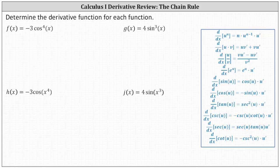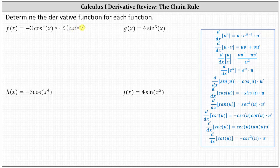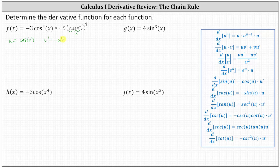When applying the chain rule, we need to identify the inner function, which we often identify as u. To identify the inner function here, it might be helpful to rewrite the function f of x as negative three times the fourth power of cosine x. In this form, it's easier to identify that the inner function u is equal to cosine x. So if we have u equals cosine x, we also have to find u prime. u prime is the derivative of cosine x, which is negative sine x. We can think of our function f as just negative three u to the fourth, and apply the chain rule with the power rule.